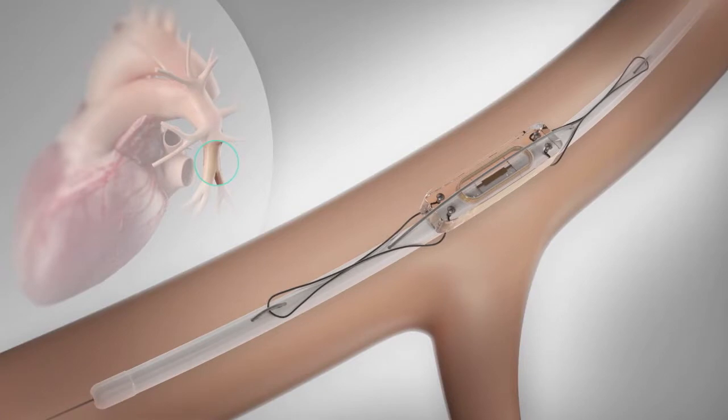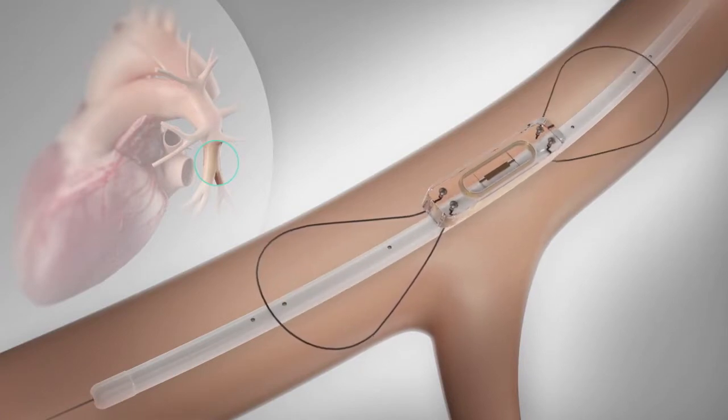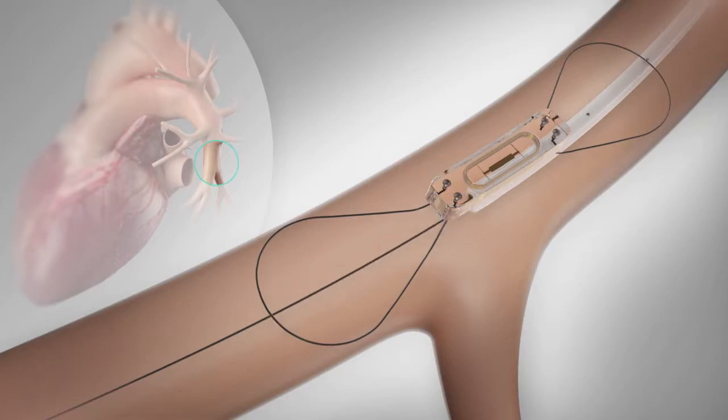This little sensor, no bigger than the size of a dime, will be implanted in your pulmonary artery during a minimally invasive procedure called a right heart catheterization.